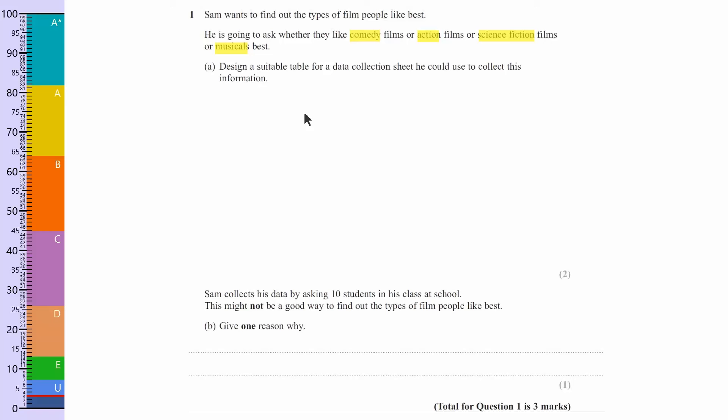So the first thing to do on the data collection sheet is to draw the tally chart. I'm just going to do some lines there. Okay, so we want to list the genres.